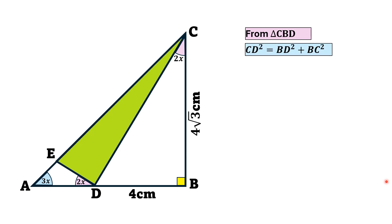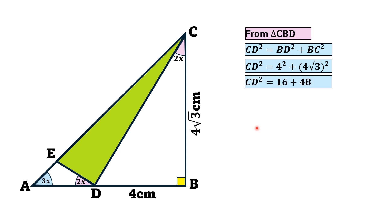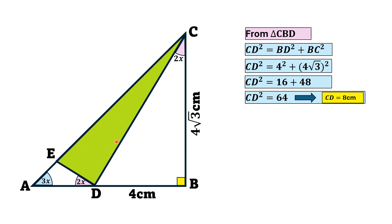From here, CD² = BD² + BC². BD and BC are given. Substituting the values 4 and 4√3, we get CD² = 16 + 48, which is 64. Taking the square root on both sides, we get CD = 8 cm.